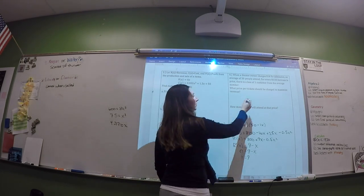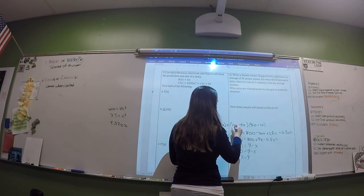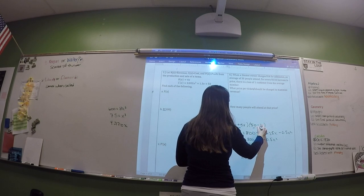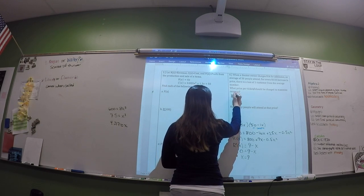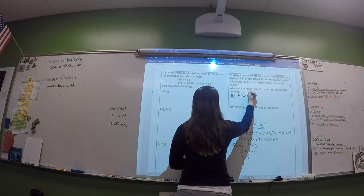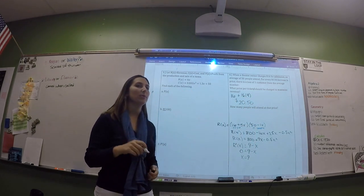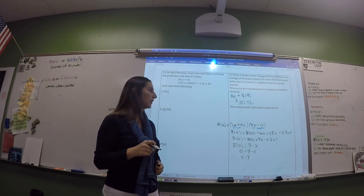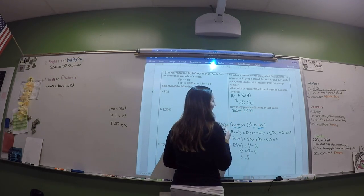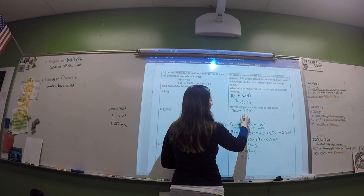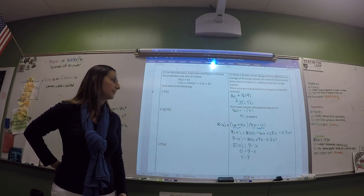The expression for price represents the ticket price, and the other expression represents the number of people. Plug X = 9 into the price expression: 16 plus half of 9 gives $20.50. Plug X = 9 into the number-of-people expression and you get 41 people will attend at that price.